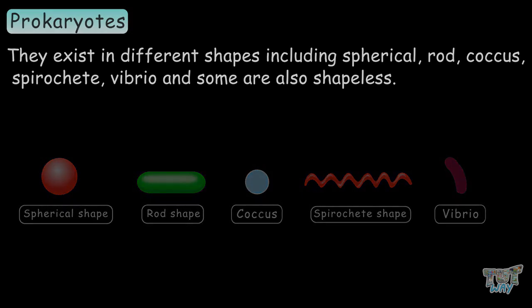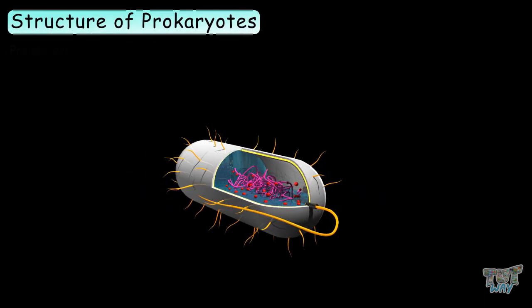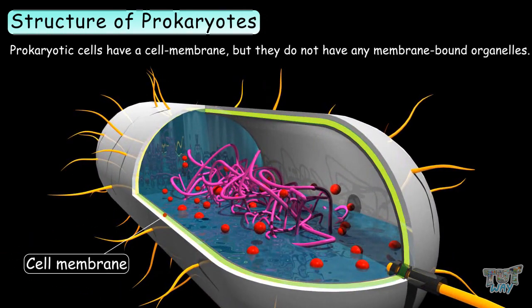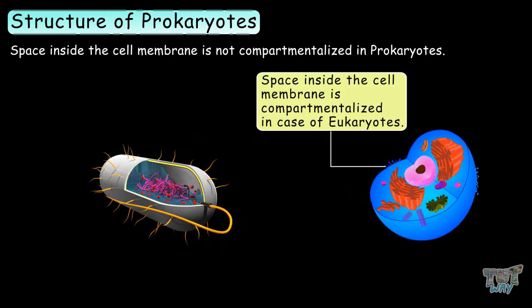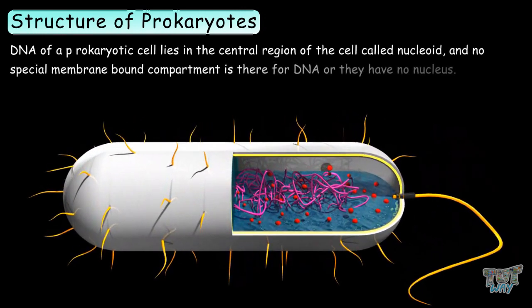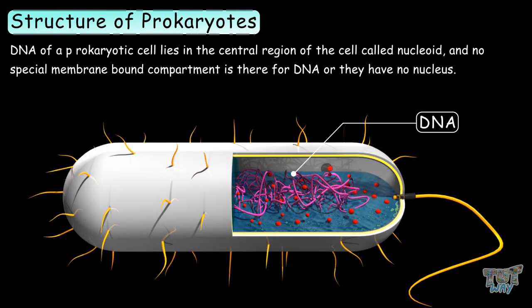Now let's learn about the structure of prokaryotes. Prokaryotic cells have a cell membrane but they do not have any membrane-bound organelles. In other words, the space inside of the cell membrane is not compartmentalized in prokaryotes, but it is compartmentalized in the case of eukaryotes. DNA of prokaryotic cells lies in the central region of the cell called the nucleoid, and no special membrane-bound compartment is there for DNA — they have no nucleus.